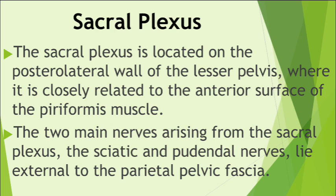The sciatic nerve is the largest nerve in the body. It is formed by the anterior rami of spinal nerves L4 to S3 — the fourth and fifth lumbar spinal nerves and the first, second, and third sacral spinal nerves — which converge on the anterior surface of the piriformis. Most commonly, the sciatic nerve passes through the greater sciatic foramen inferior to the piriformis to enter the gluteal region, then descends along the posterior aspect of the thigh to supply the posterior aspect of the lower limb.